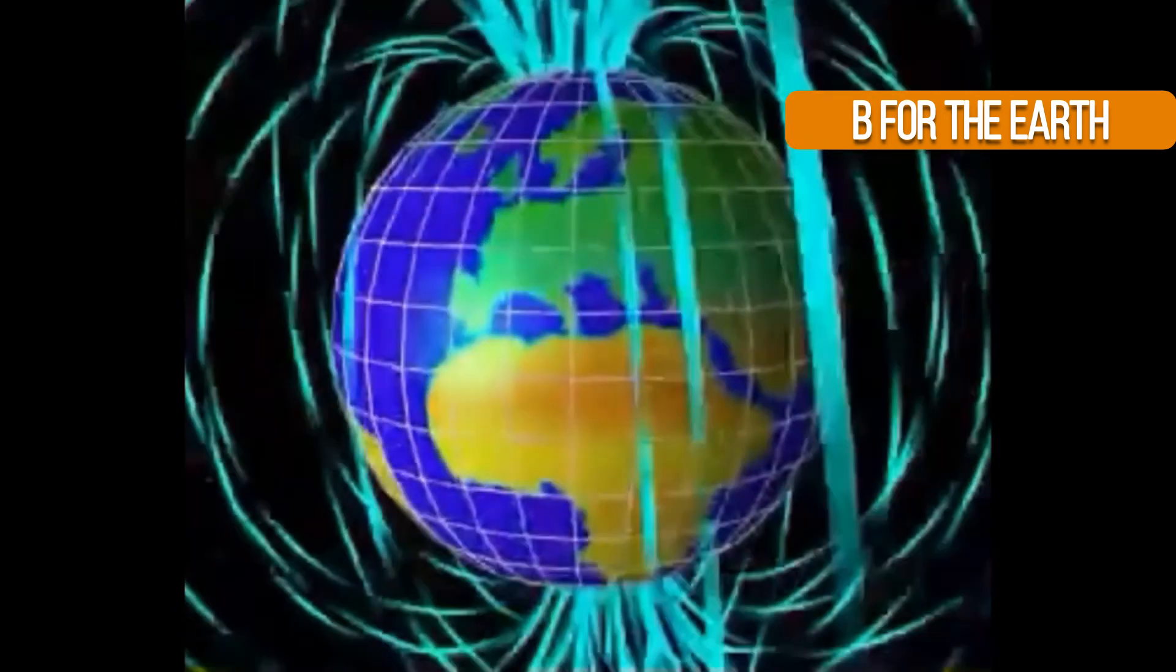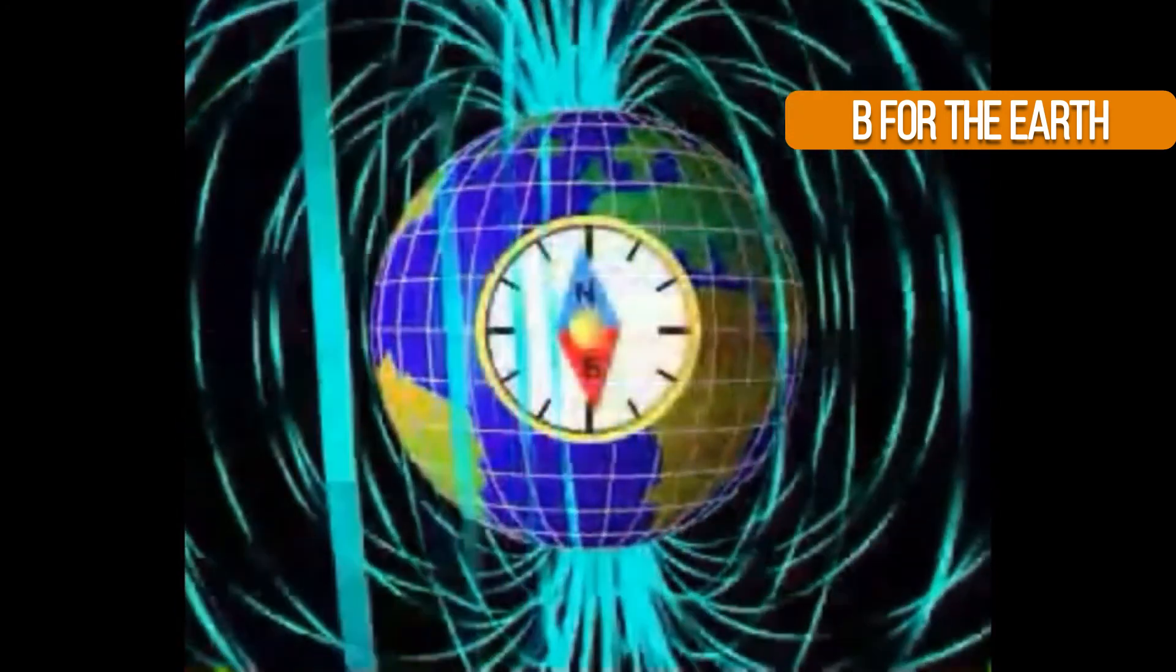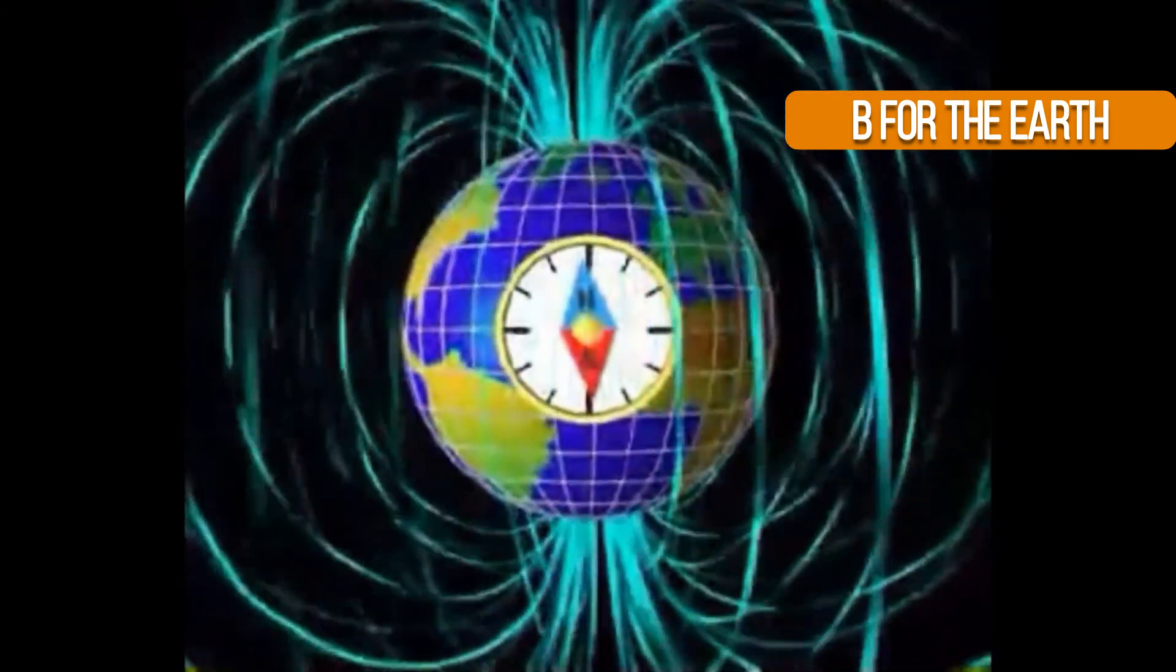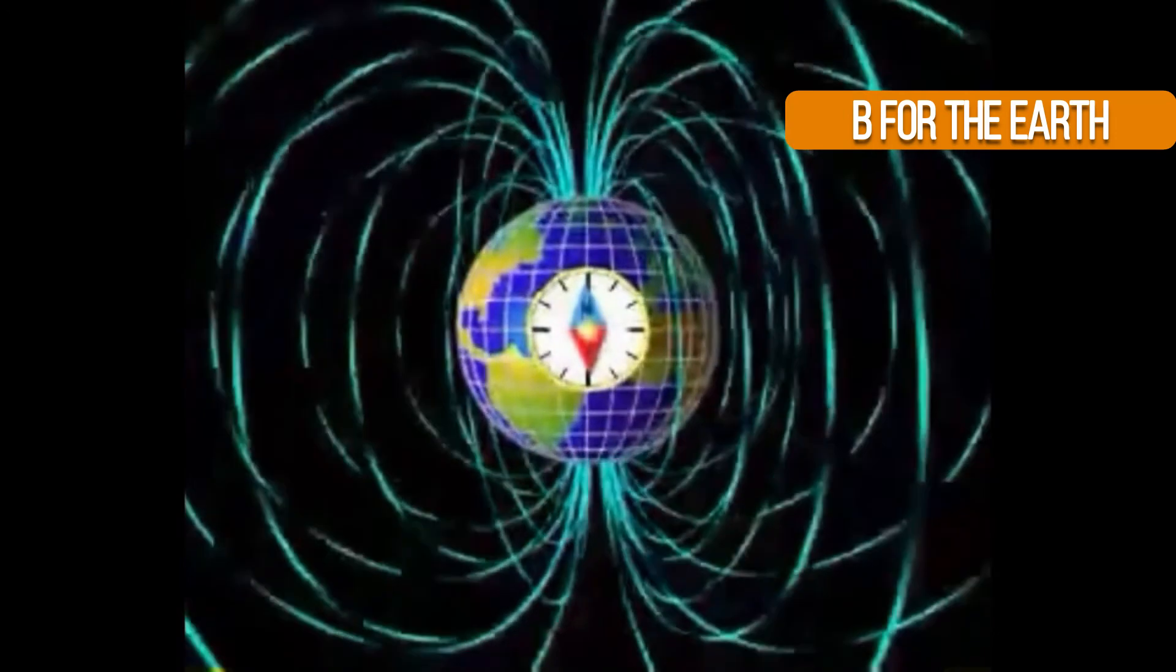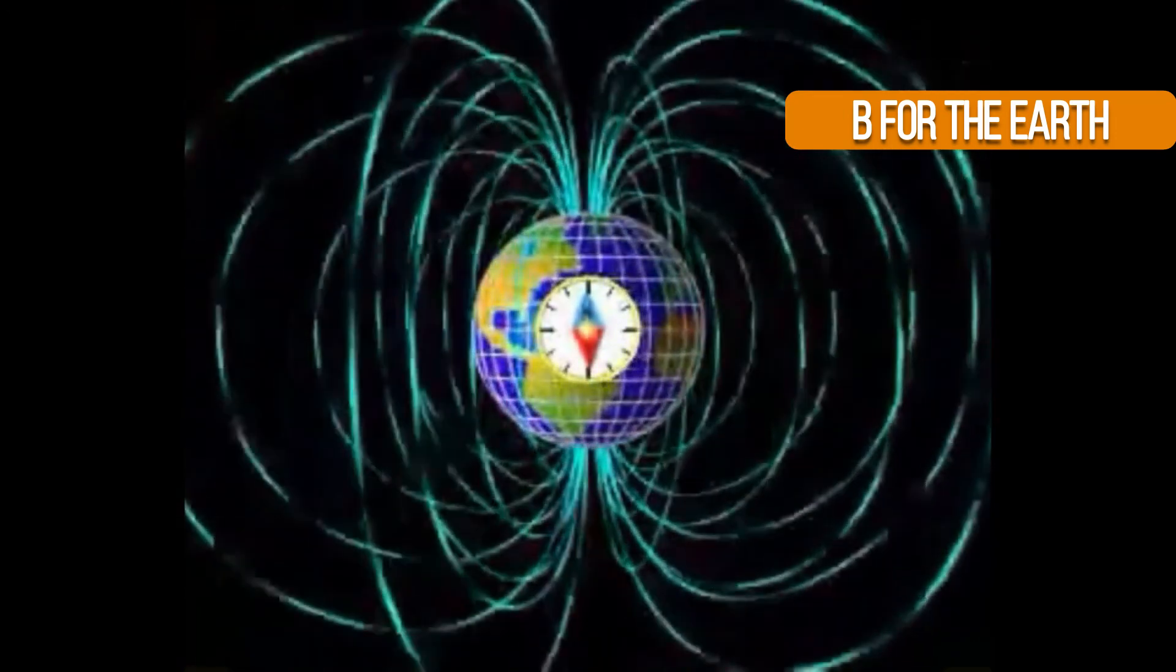The Earth's South magnetic pole is located in the vicinity of the geographic North Pole, whereas the North magnetic pole is situated in the vicinity of the geographic South Pole, as indicated by the South Pole of a magnetic needle.